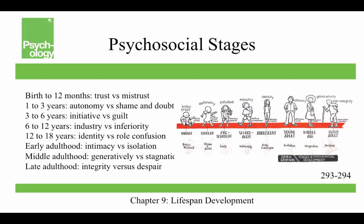In early adulthood it's intimacy versus isolation — we're ready to share our lives with others. Middle adulthood is generativity versus stagnation: how do you feel about your life's work? Being a college professor, I always feel this is a great job — teachers get to do very meaningful work. Late adulthood is integrity versus despair, where people ask: was my life a success or a failure?